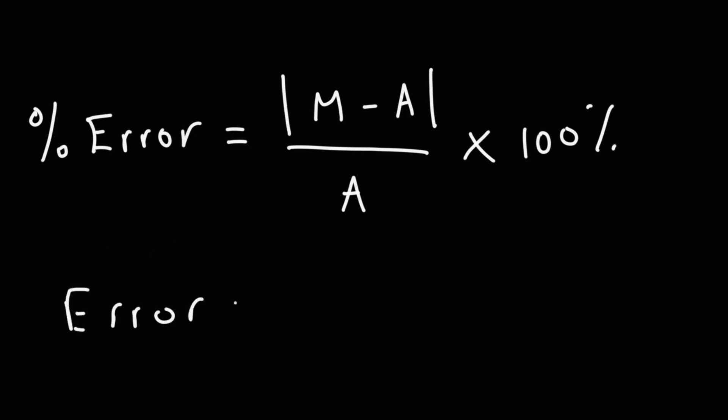The error, not the percent error, but the absolute error is basically the difference between the measured value and the actual value. Other textbooks may have a T here for true value. But true value, actual value, it means the same thing.